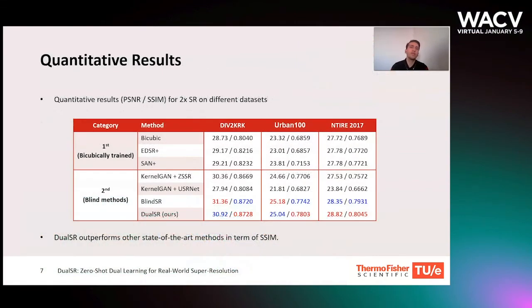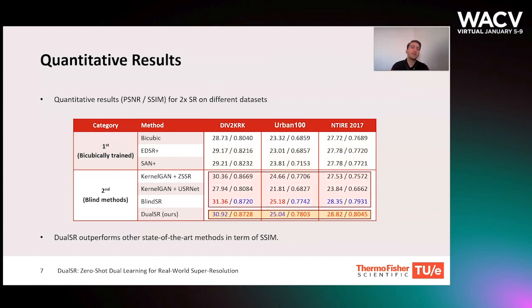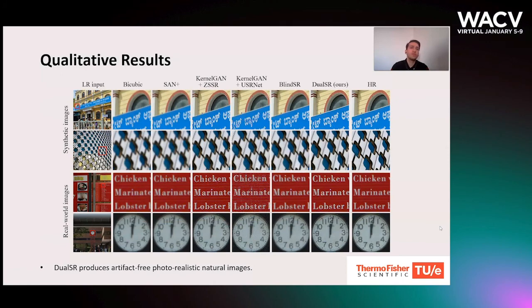At the end, we compare our method against other state-of-the-art methods on three different datasets. The first category in the table contains methods trained on images downscaled with bicubic interpolation. The degradation process for the tested datasets is more complex than bicubic interpolation, and that's why these methods perform poorly compared to Dual SR. The second category contains blind super-resolution results, where Dual SR performs really well on all datasets, outperforming other methods in terms of SSIM. In all test scenarios, Dual SR produces artifact-free natural images. Our adaptive Dual SR is a bigger step toward better and more robust super-resolution methods. Thank you for your attention.